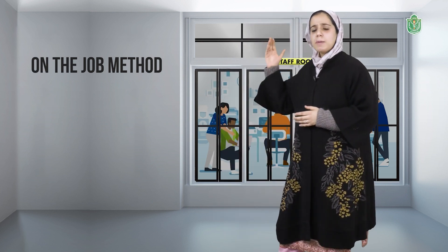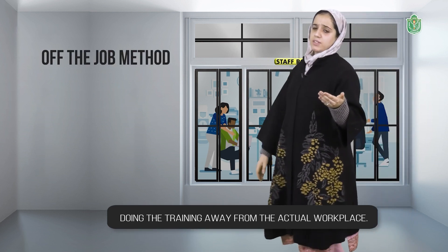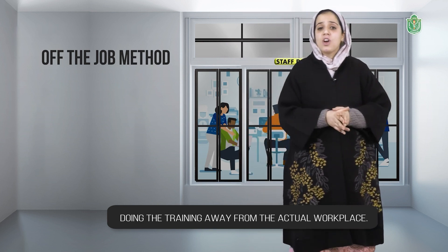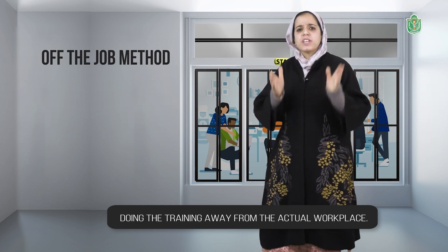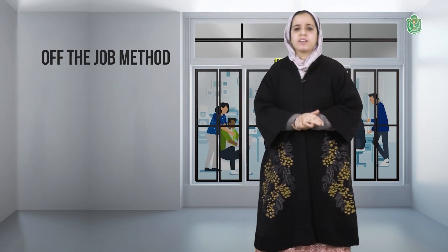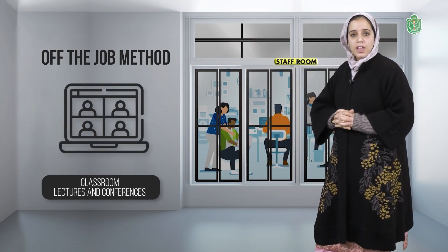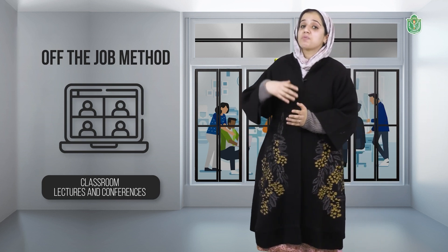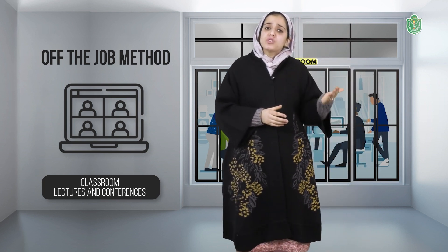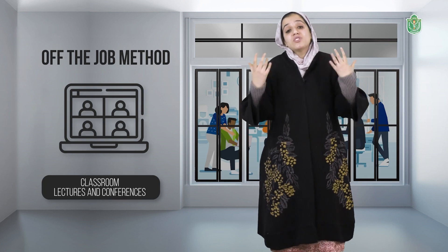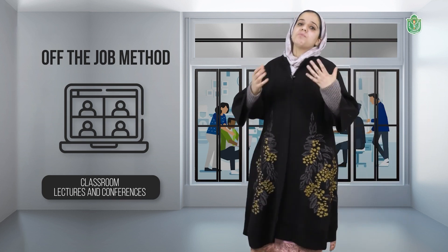That was about the methods of on-the-job training. The next is off-the-job methods. Off-the-job method means doing the training away from the actual workplace. It is done by specialists or agencies, with emphasis on learning rather than doing. The first method here is classroom lectures or conferences. Classroom lectures are very helpful in explaining concepts and principles, and the use of audio-visual aids and demonstrations makes these formal classrooms more interesting and helps understand difficult points clearly.